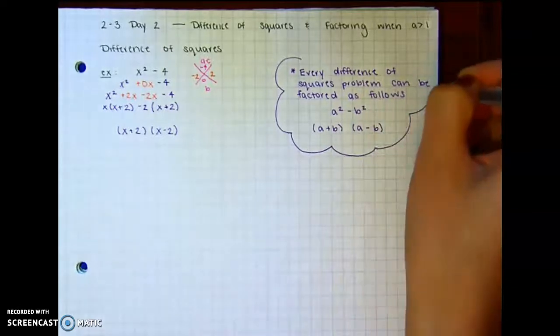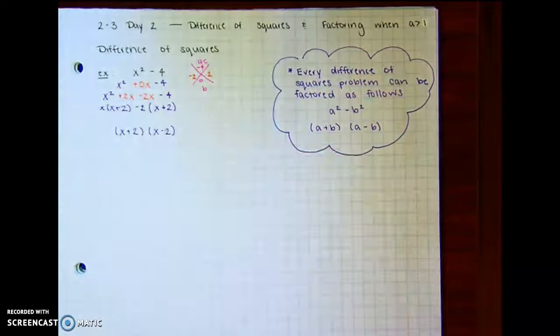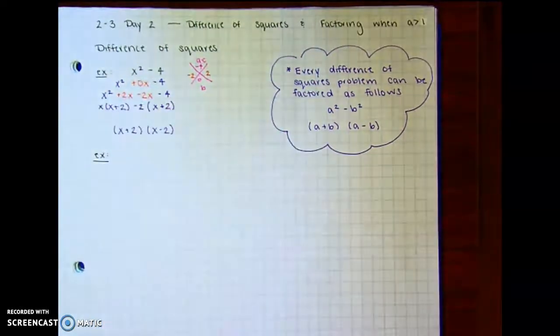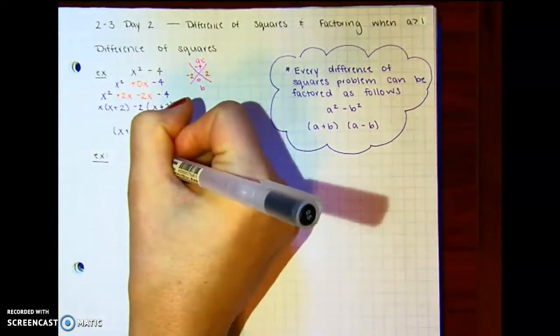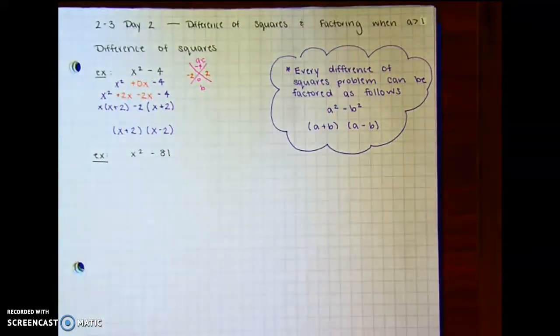So let's do just a couple more examples real quick. And you don't actually have to show that much work. So if I have x squared minus 81. Well...